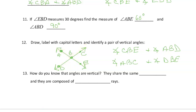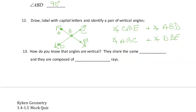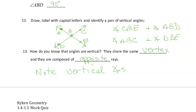How do you know that angles are vertical? They share the same vertex and they are composed of opposite rays — that's what makes them vertical. Note: vertical angles are congruent; they measure the same.